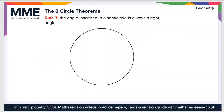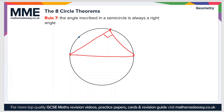Rule number seven: the angle inscribed in a semicircle is always a right angle. Drawing a diameter across the circle to form two semicircles, if we connect the endpoints of the diameter to a point on the circumference, the angle formed at the circumference will always be a right angle — regardless of where you place that point. The red, green, and blue triangles all form a right angle at the circumference.